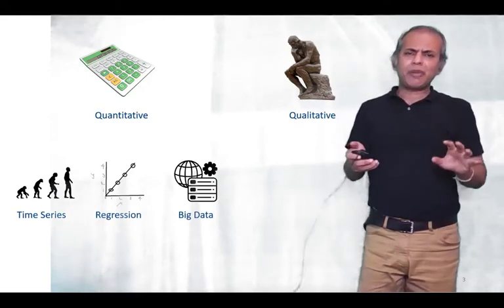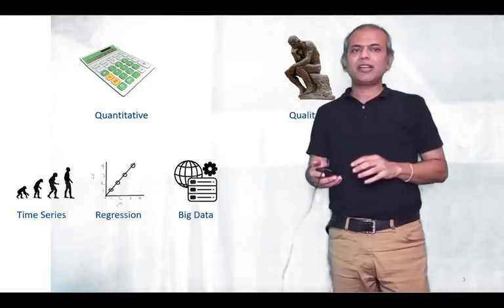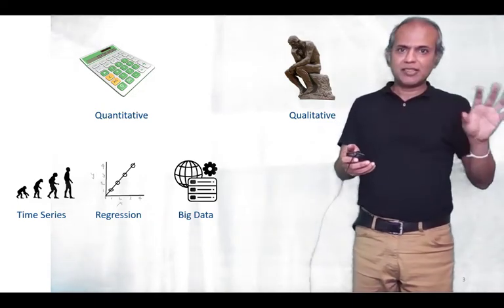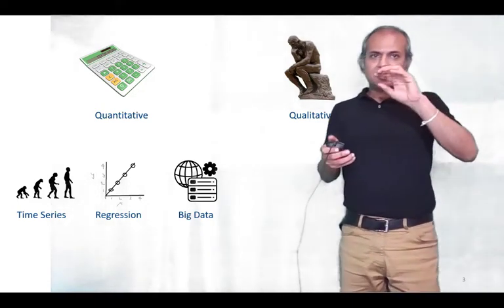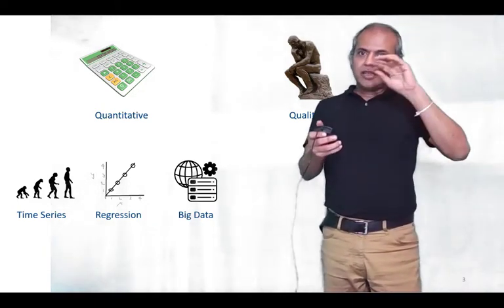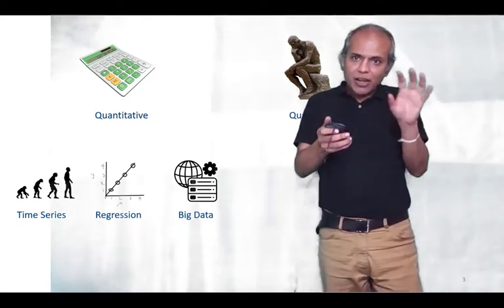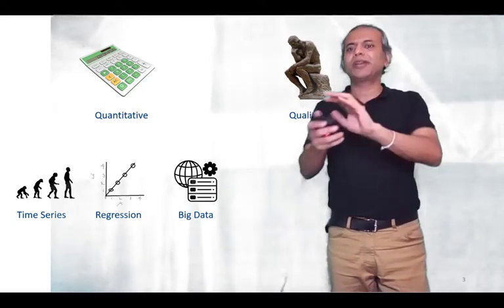So in quantitative we have three primary divisions. Primary one is time series, and we're going to talk about more of time series in the next slide. And here we say that the demand of a particular product is based on time. So as time changes, the demand of that particular product changes predictably.